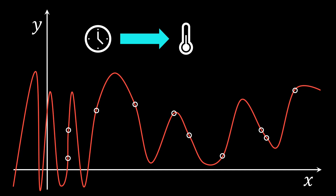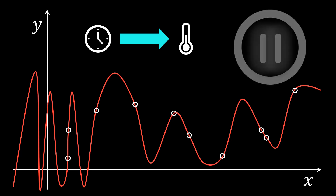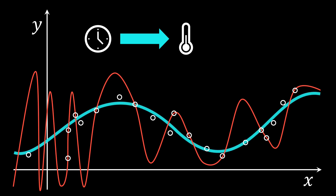What might be the issue with this solution? The issue is that our approximation might perform badly if we were to collect new data. This is because the underlying function that we aim to model might be in fact much simpler, and the jitter in the data is simply coming from noisy measurements.